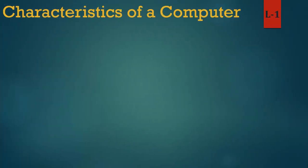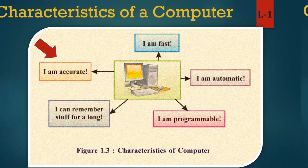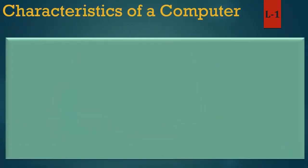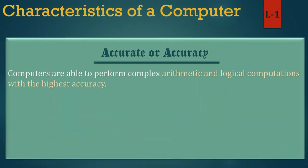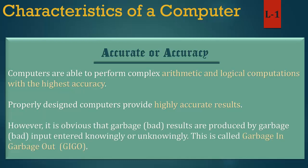Now we learn accuracy in detail. Computers are able to perform complex arithmetic and logical computations with the highest accuracy. Properly designed computers provide highly accurate results. However, it is obvious that garbage — bad results — are produced by garbage — bad input entered knowingly or unknowingly. This is called garbage in, garbage out — GIGO.